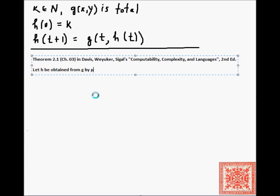The theorem states: let h be obtained from g by primitive recursion, as defined in that definition. We will refer to it from now on as Definition 1. And let g be computable. Then h is computable too.